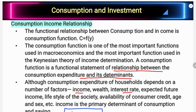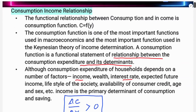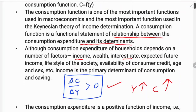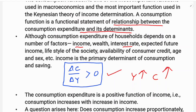Income is the primary determinant of consumption and saving. Consumption expenditure has a positive relationship with income — that is, as income increases, consumption expenditure also increases. The consumption expenditure is a positive function of income: consumption increases with an increase in income.